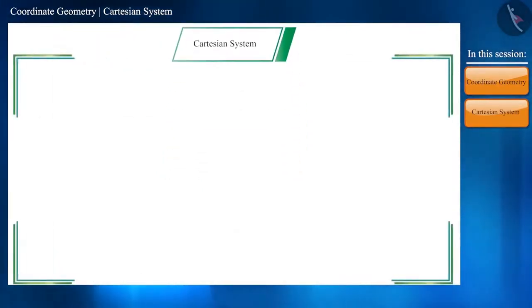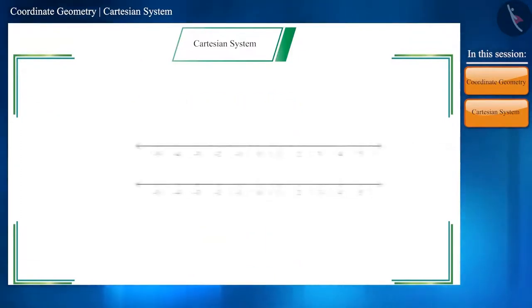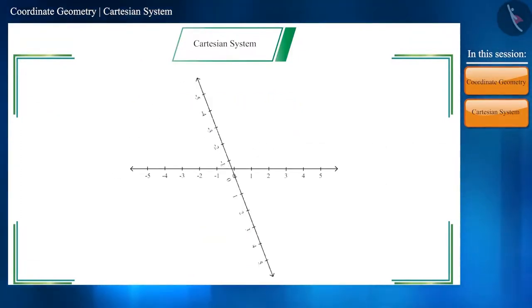As we have seen, two directions are required to understand the position of a point in a plane. In the Cartesian system, two number lines are perpendicular to each other.